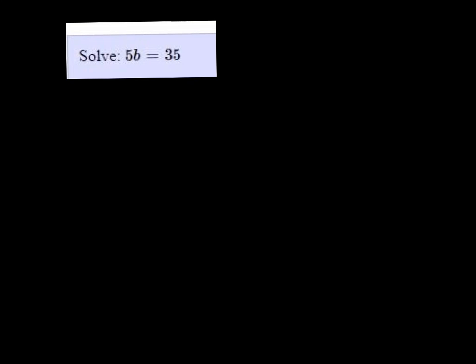We're going to solve 5b equals 35. We want b by itself, and right now that 5 is standing in our way. It's 5 times b, even though we don't see any multiplication symbol there.